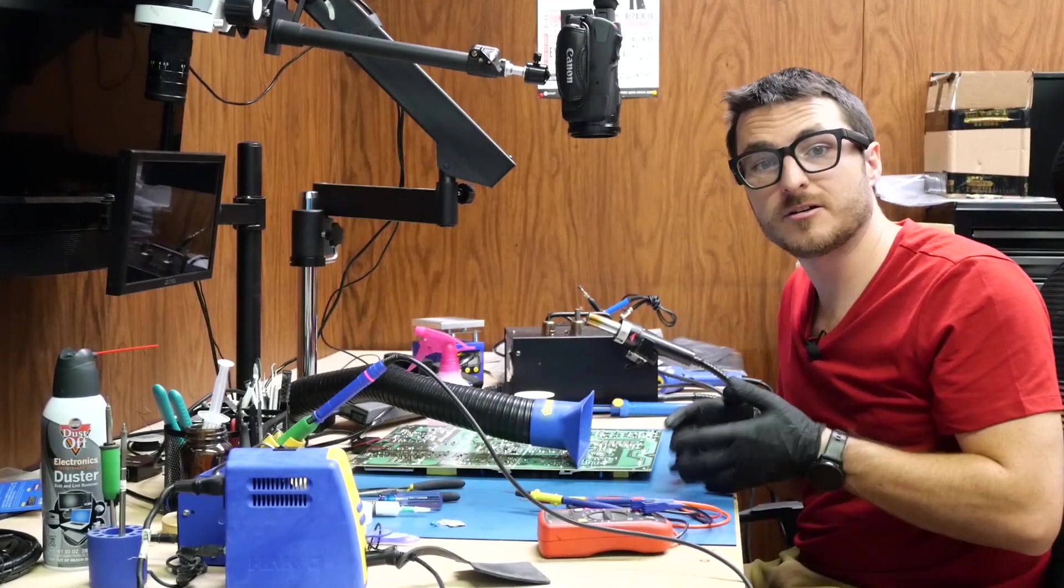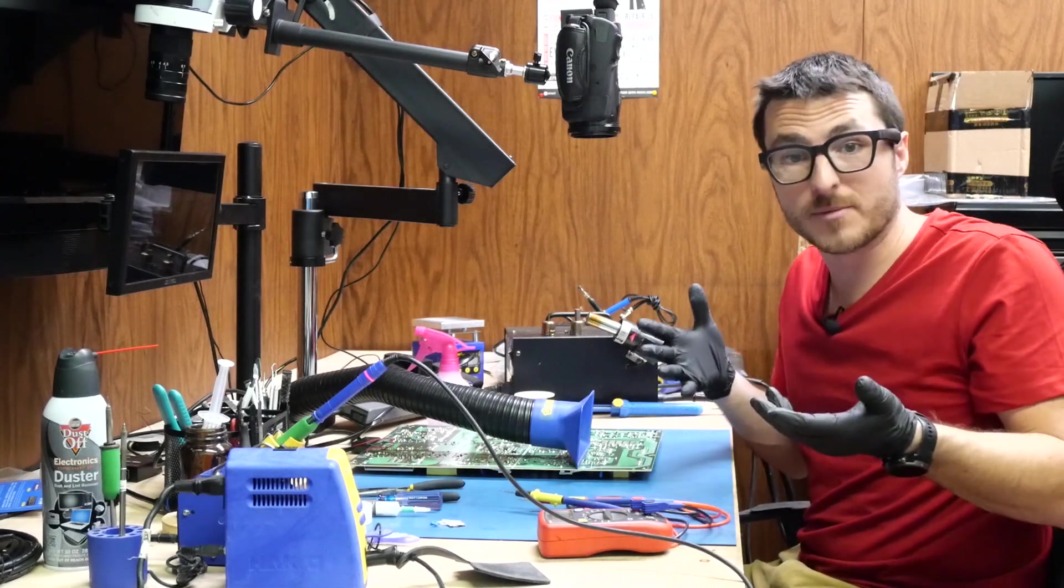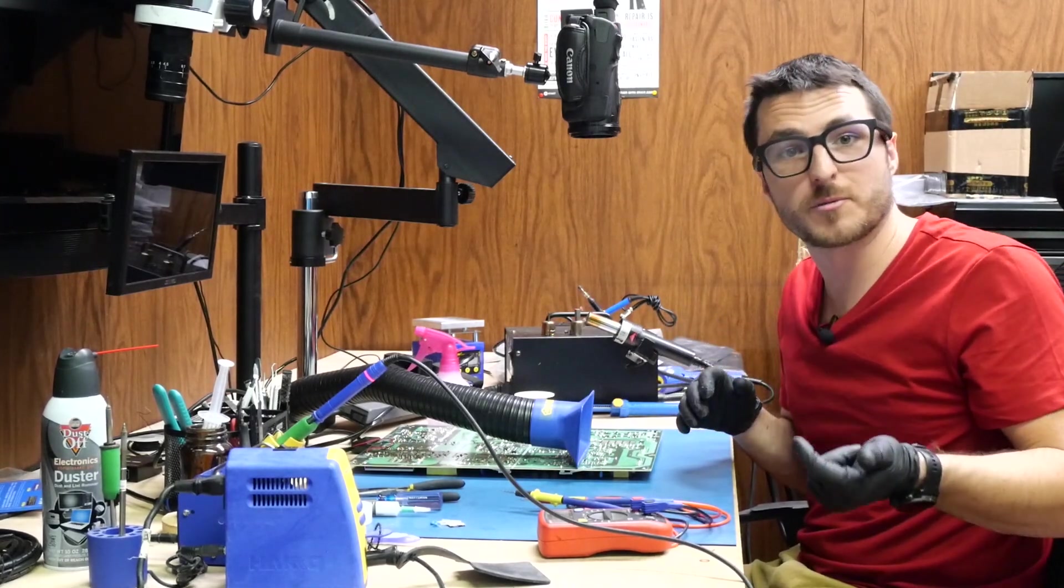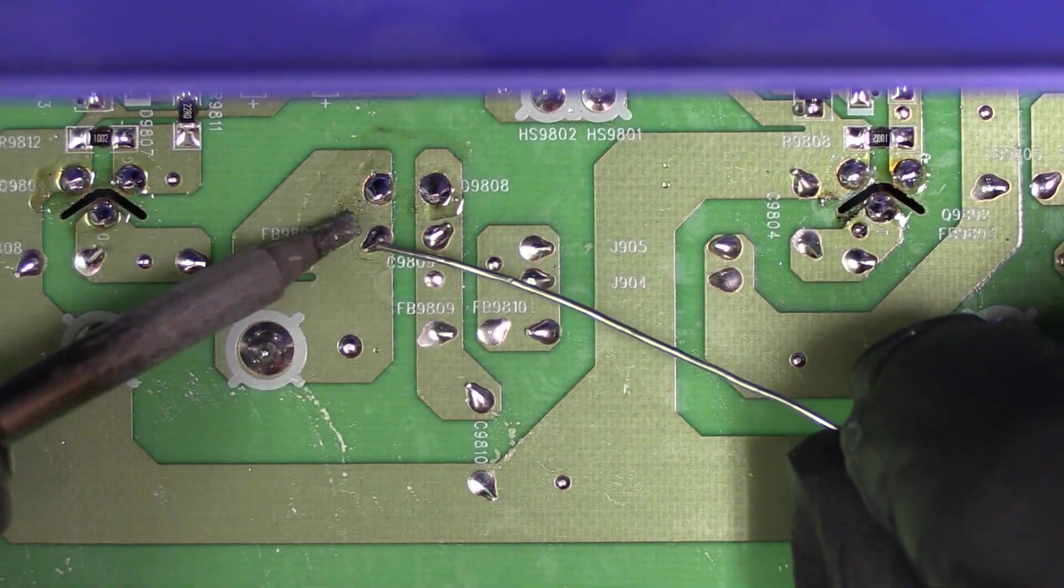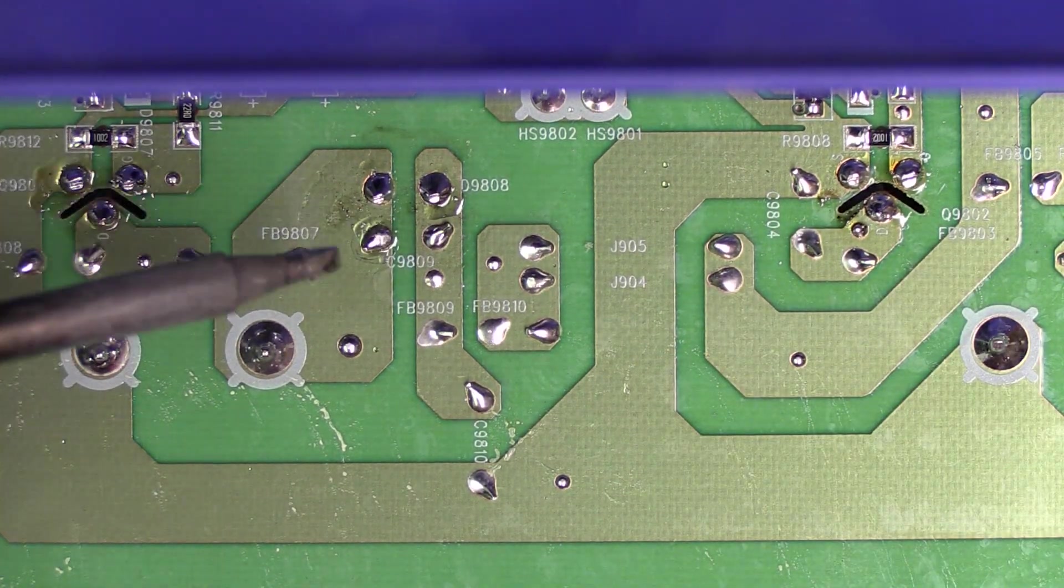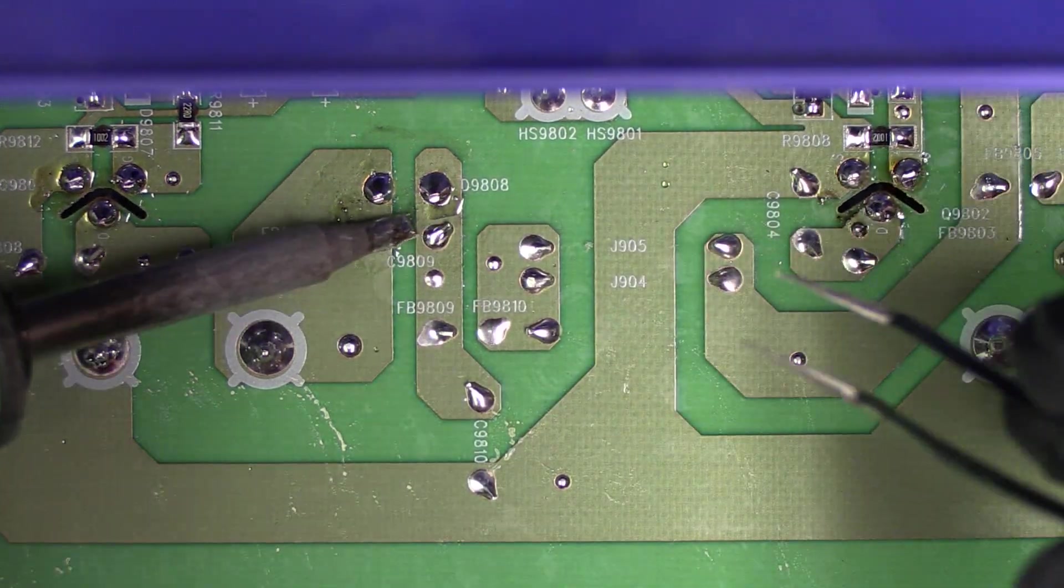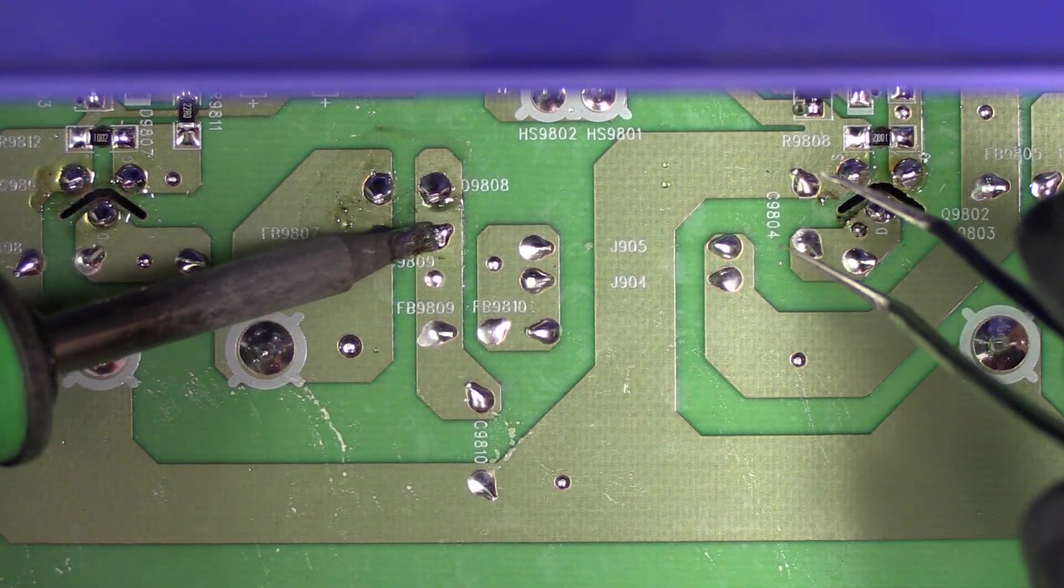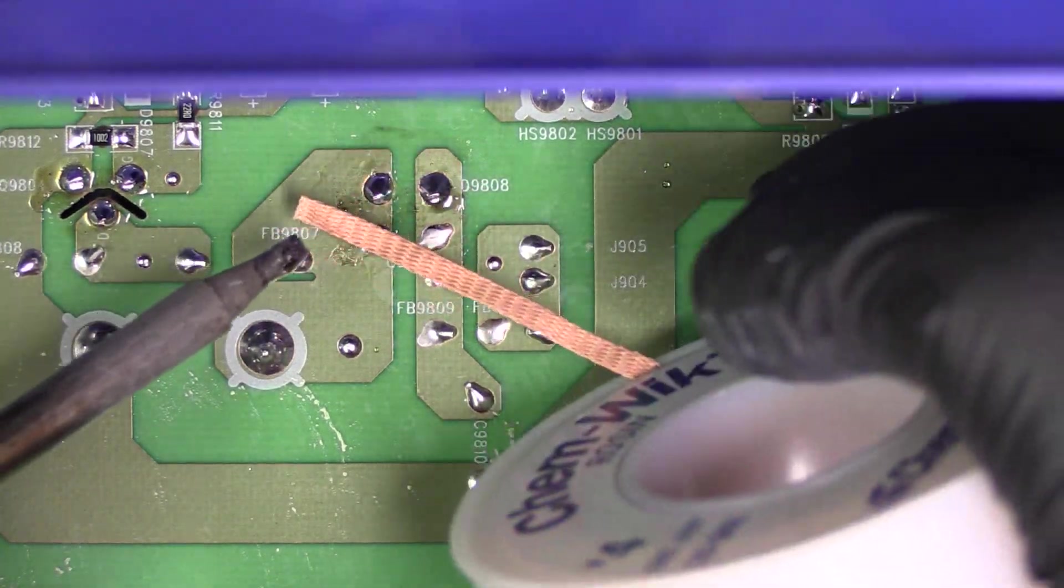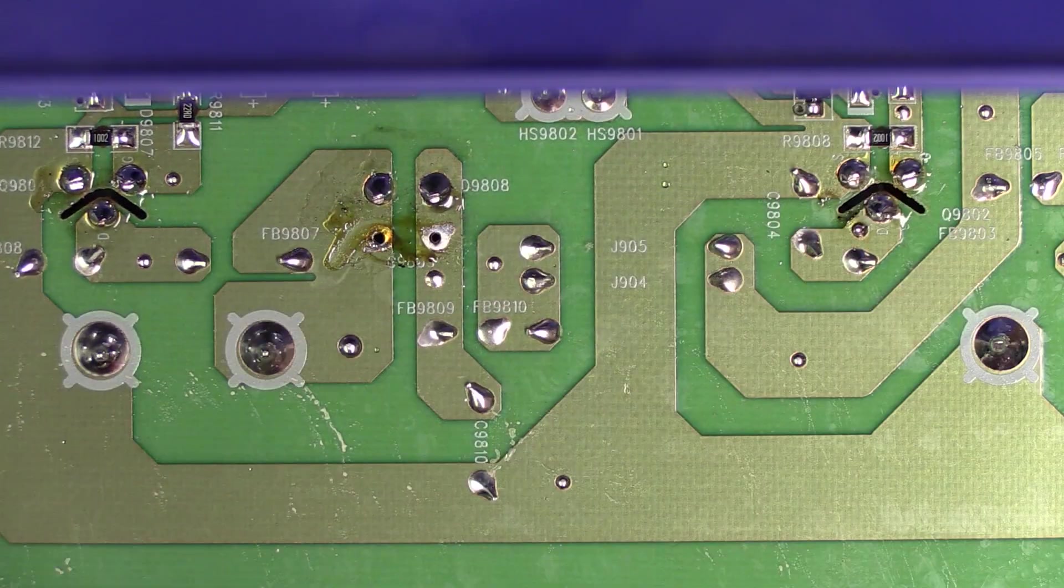Now we're going to replace the capacitor. There is one that is completely missing on the front of the board. I believe these are the two legs for it here. I'm just going to solder from this side and push those legs through. We'll use the desolder wick here to finish it off. We're left with just these two legs.